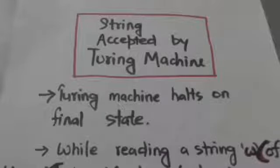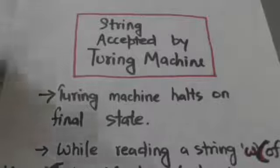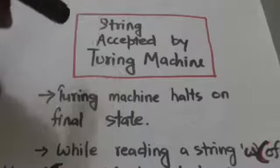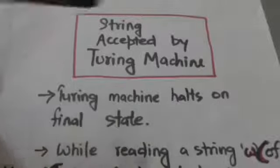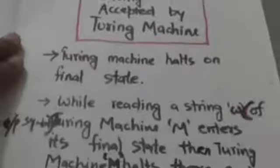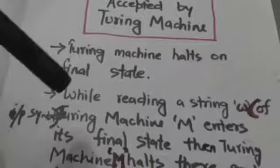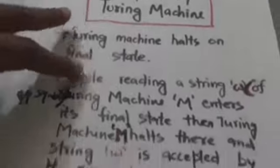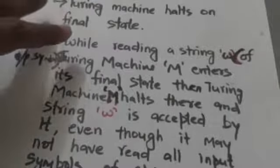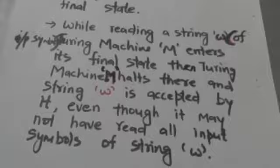Hello friends, welcome back to the tutorials. In this tutorial we will study about strings accepted by a Turing machine. Without loss of generality, we will first assume that the Turing machine halts on its final state. If while reading a string W of input symbols, Turing machine M enters its final state, then M halts there and string W is accepted by it, even though it may not have read all input symbols of string W.